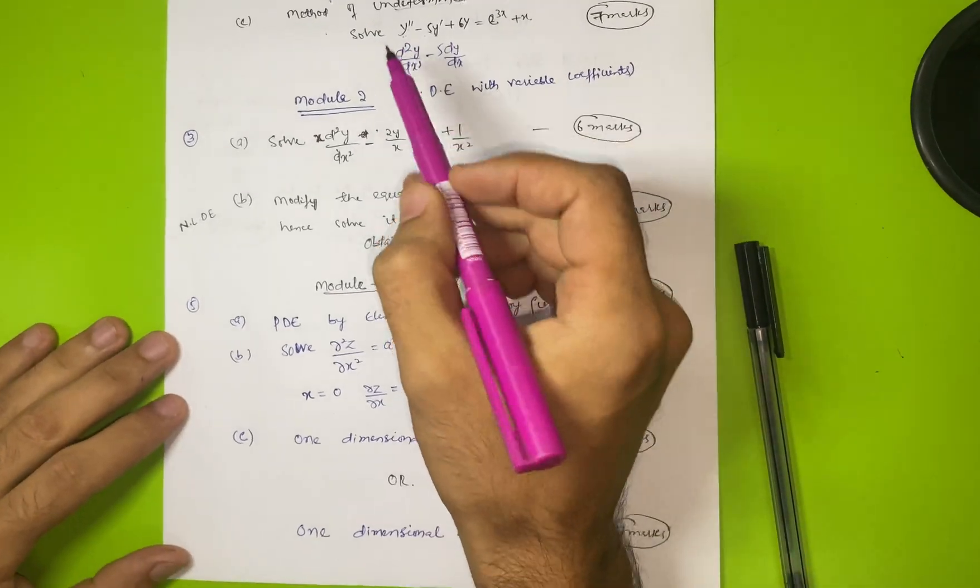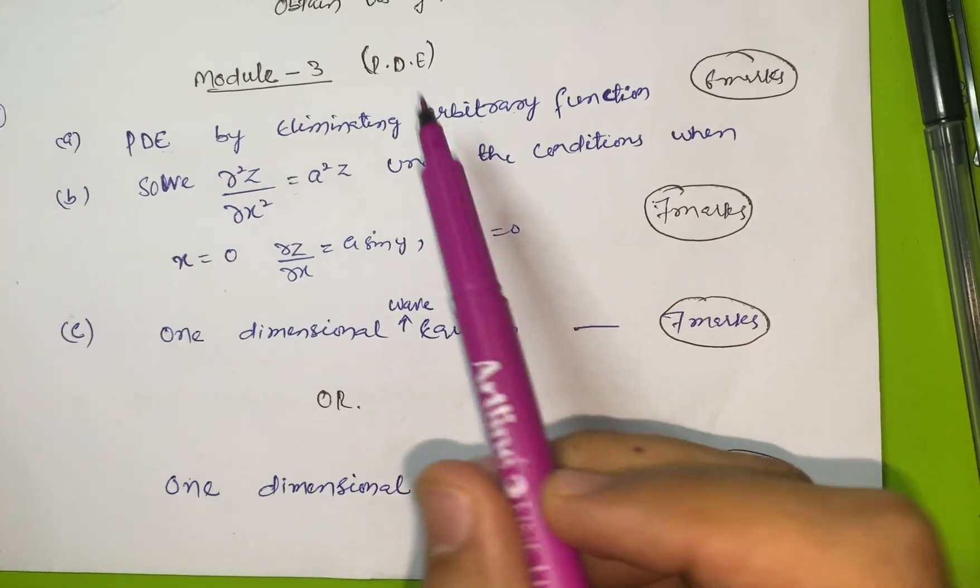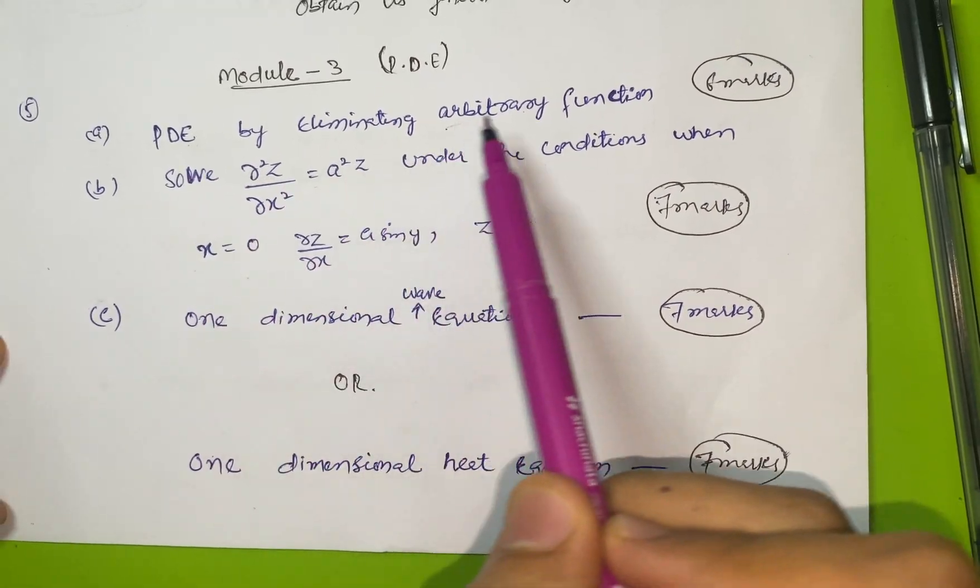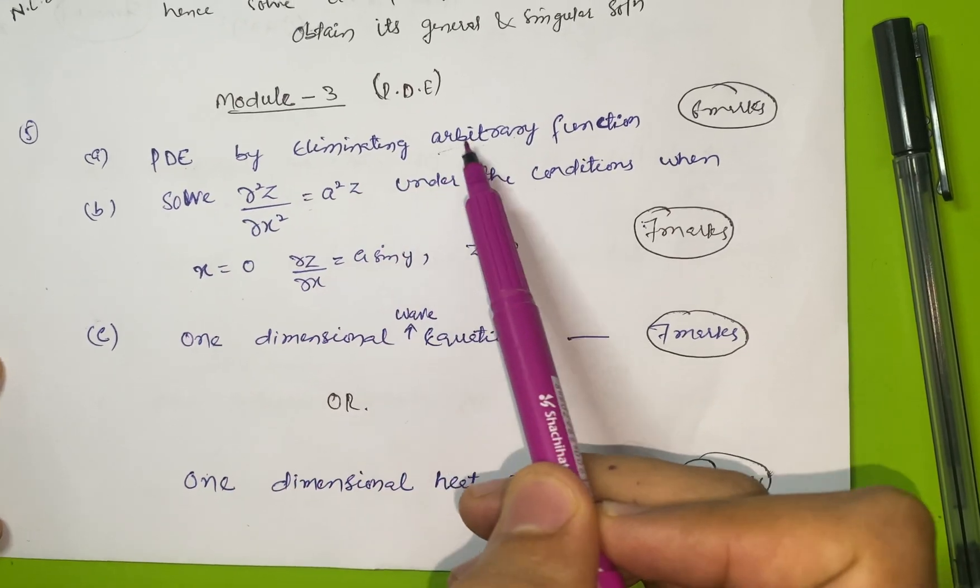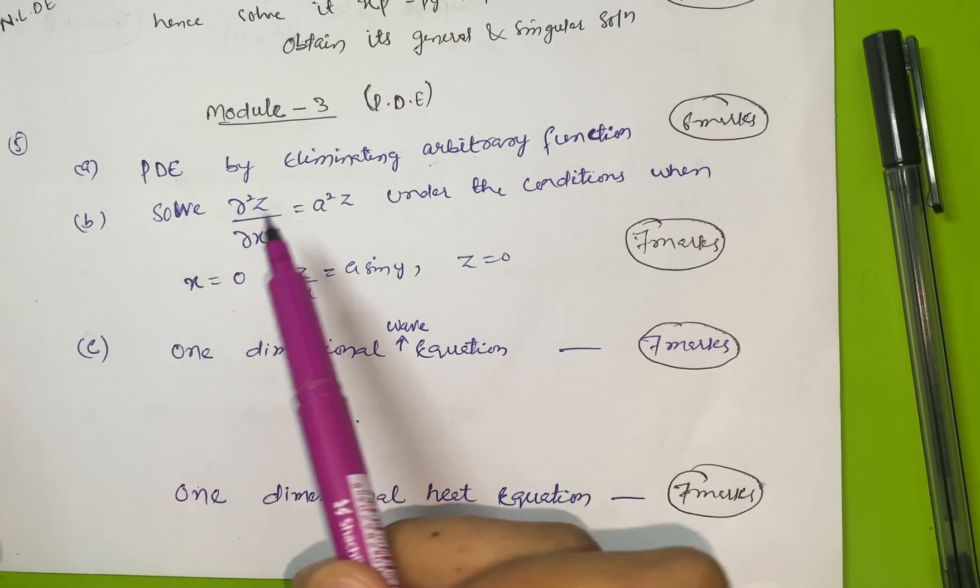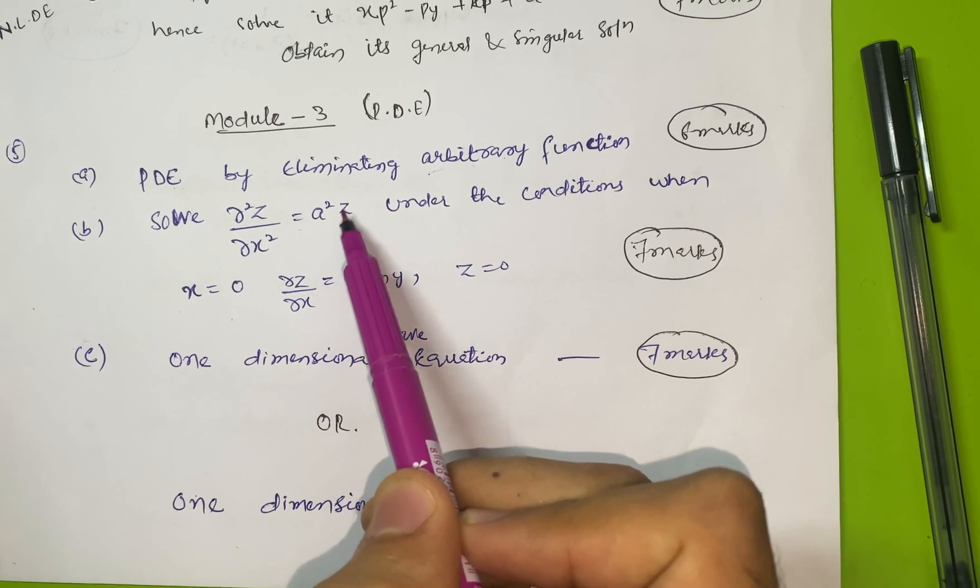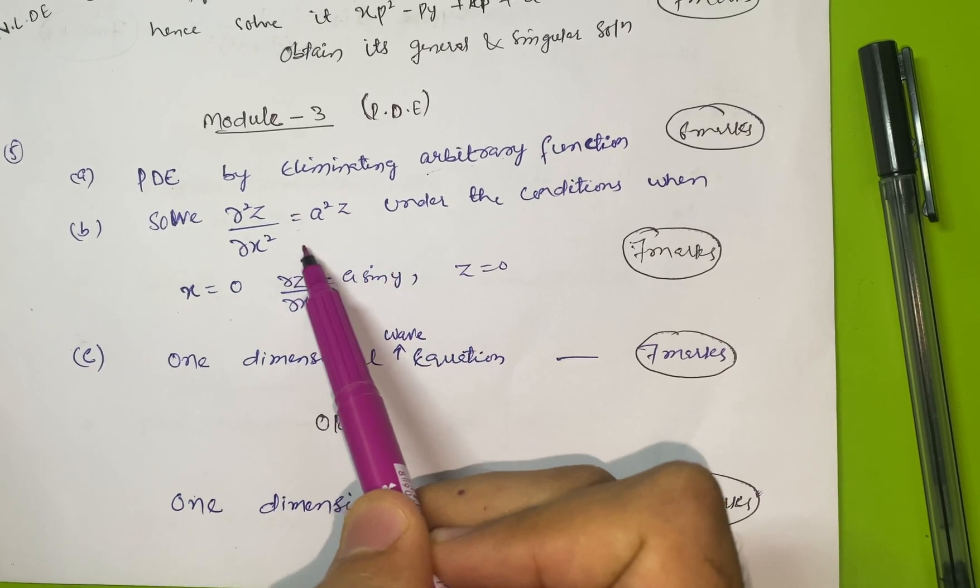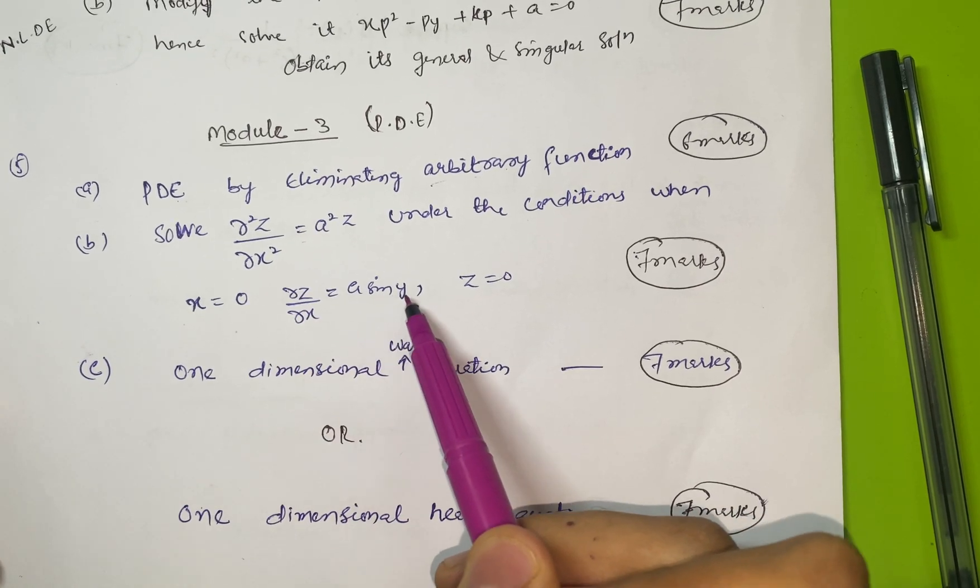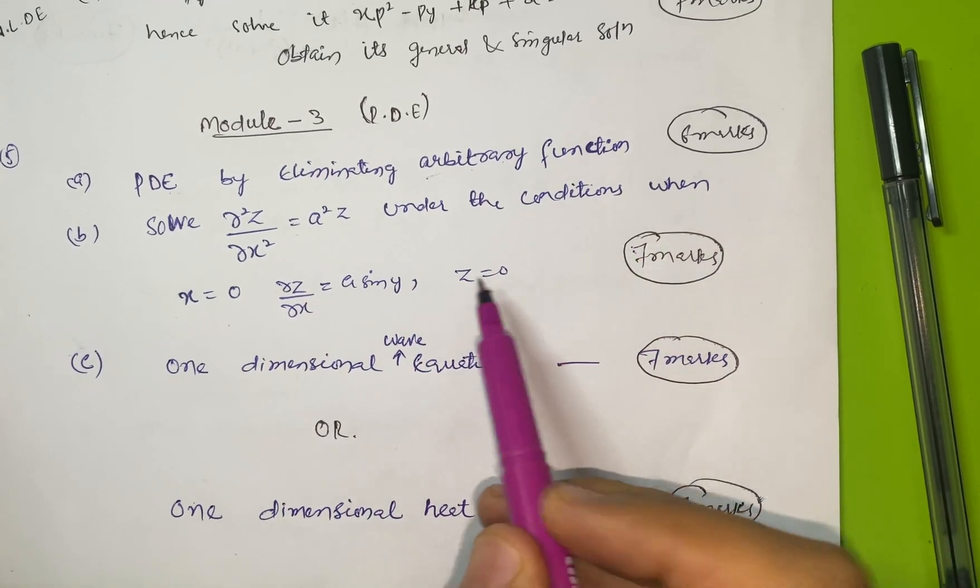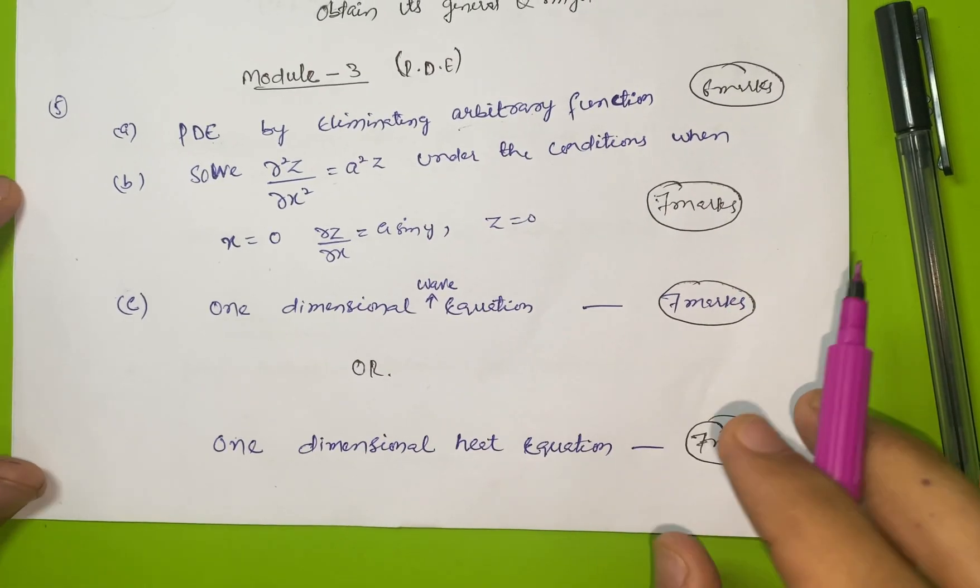These three modules are very simple. First of all you should attempt Module 3, you can easily get marks in this module. The concepts are partial differential equation by eliminating arbitrary function. For example, solve ∂²z/∂x² = a²z under the conditions when x=0, ∂z/∂x = a sin(y), z=0. This carries good marks, you can refer to previous papers.